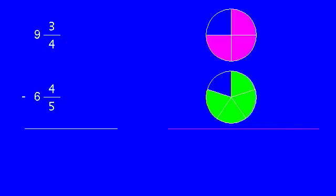If we're subtracting mixed numbers, first we have to get the pieces to a common size to see if we have enough to give away. So in this case, that's 20. And going from fourth to twentieth, the multiple is five, three times five is 15.